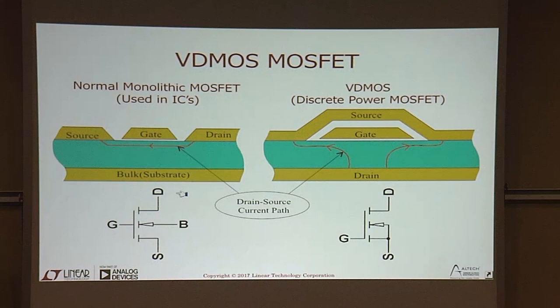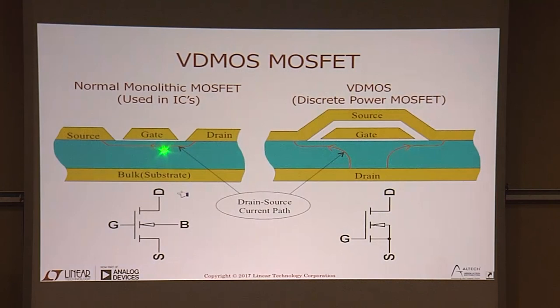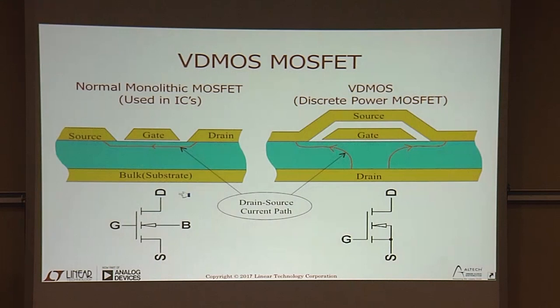In a monolithic MOSFET, everything is lithographed on the same side, so there's the source, gate, and drain all on the same side of the silicon. The gate defines the channel — the size of the polysilicon gate defines this channel region. The length of the channel is the distance from there to there, and the width of the channel would be the direction into the board. If you've seen the cross-section of one monolithic MOSFET, you've seen them all — the only difference would be their mechanical dimensions.